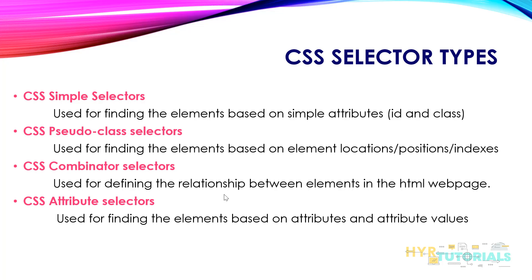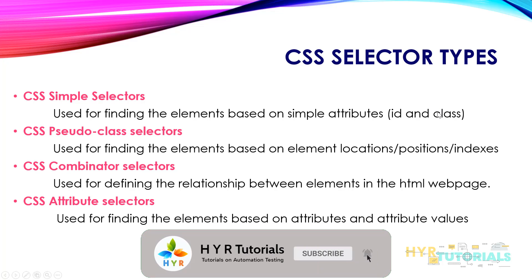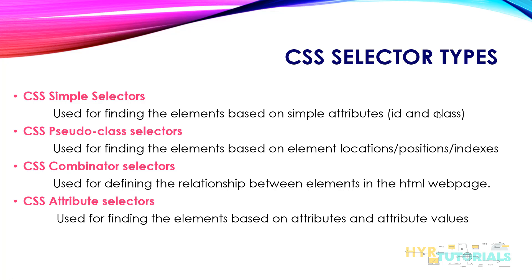Using attribute selectors, we can identify any element by using attribute values. Apart from simple attributes like ID and class, we have many others — for example, an image has SRC and title; a text box has max length, value, and placeholder. Using those attributes, we can find elements. In attribute selectors, you don't need to pass the entire value — there are functions to pass a partial attribute value. For instance, you can find an element using just the starting text, the ending text, or a partial substring of the attribute value.